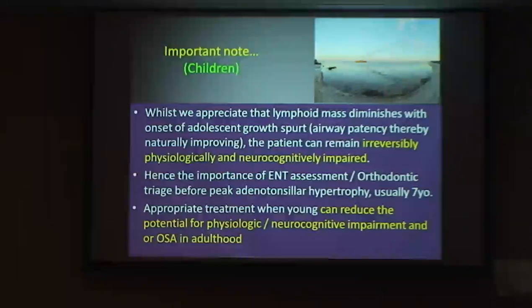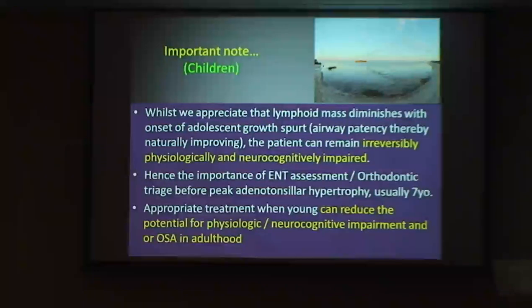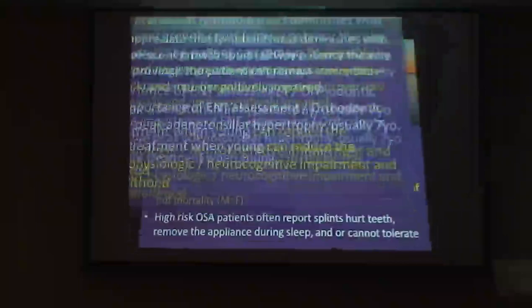I believe we should have ENT assessment before peak adenotonsillar hypertrophy at age seven. If I've got any concerns with a child, the sooner they're off to a paediatric ENT the better. Let them make the call — if they reckon there's no problem, I've done my job. Appropriate treatment when young can reduce the potential for impairment and OSA in adulthood.